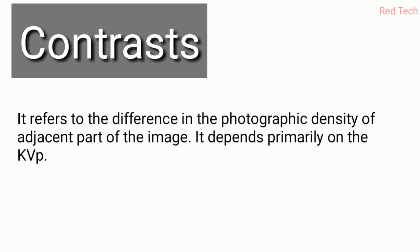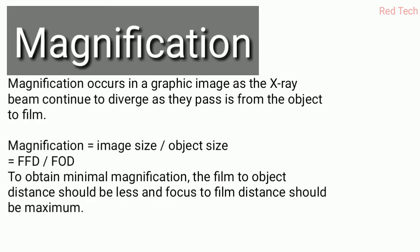The next point is magnification. Magnification occurs in a radiographic image because the x-ray beam continues to diverge as it passes from the object to the film. Magnification can be calculated by dividing image size by object size. To obtain minimal magnification, the object-to-film distance should be as small as possible, and the focus-to-film distance should be maximum.